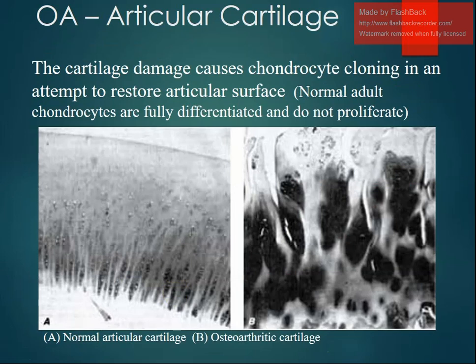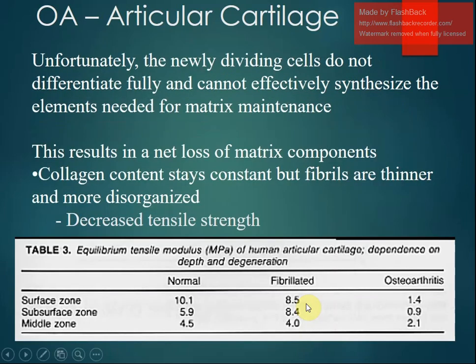Cartilage damage causes chondrocyte cloning in an attempt to restore the articular surface. Normal adult chondrocytes are fully differentiated and do not proliferate. Unfortunately, the new dividing cells do not differentiate fully and cannot effectively synthesize the elements needed for matrix maintenance. The collagen content stays constant but fibrils are thinner, more disorganized, and there is decreased tensile strength.